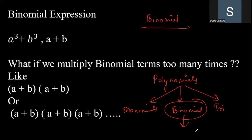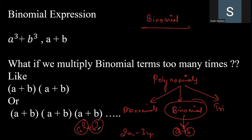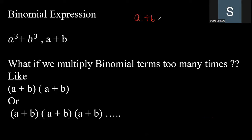Binomials means having two terms together, like a plus b — one term is 'a' and one is 'b' with a mathematical operator. For example, 2x minus 3y has two terms. Similarly, a cubed plus b cubed has two terms. The power can be any whole number, but remember: a binomial always means exactly two terms. So a plus b is a binomial expression.